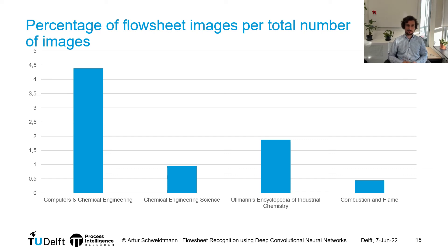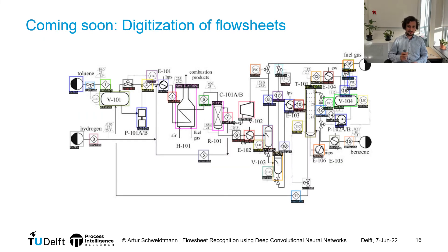Now that we have mined and continue to accumulate these flowsheet images, the question is: what do we do next? One difficulty is that the images are still not machine-readable. If we actually want to get findable, interoperable, FAIR data for chemical process flowsheets, we need to identify the structure and topology of the flowsheets — and that's the work we're currently working on. We are working on object detection algorithms able to identify different categories of unit operations from images, and also on identifying the connectivity of these flowsheets.